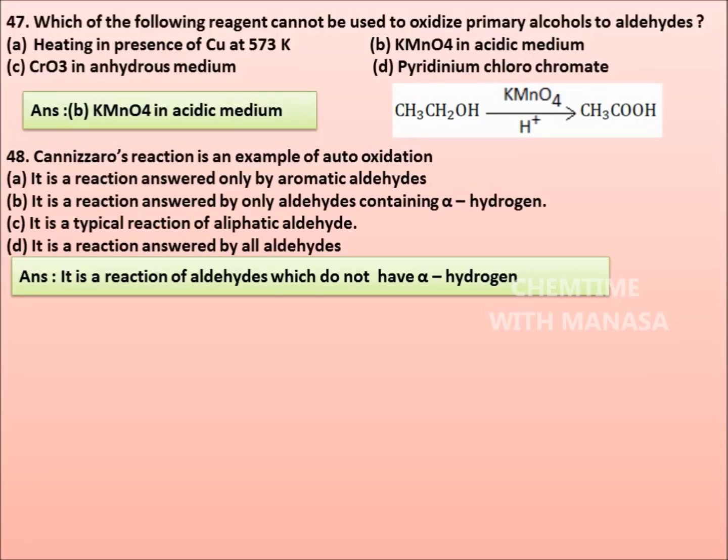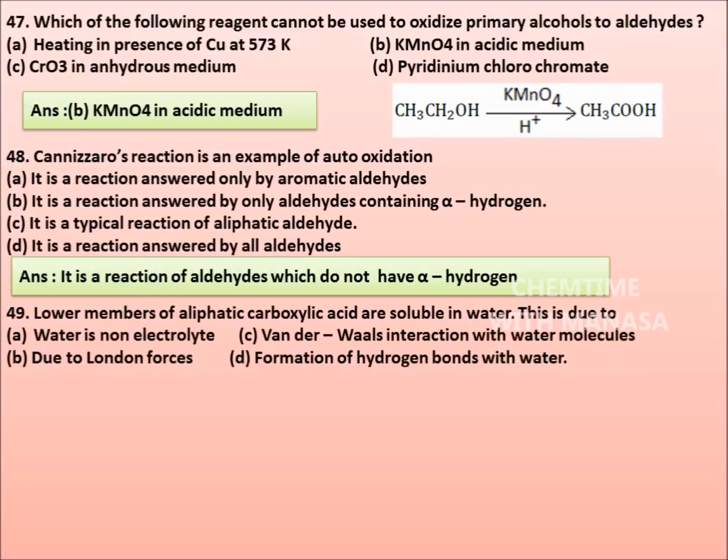Question number 49. Lower member of aliphatic carboxylic acids are soluble in water due to: water is non-electrolyte, Van der Waals interaction with water molecules, due to London forces, formation of hydrogen bonds with water. Correct answer is option D, formation of hydrogen bonds with water.